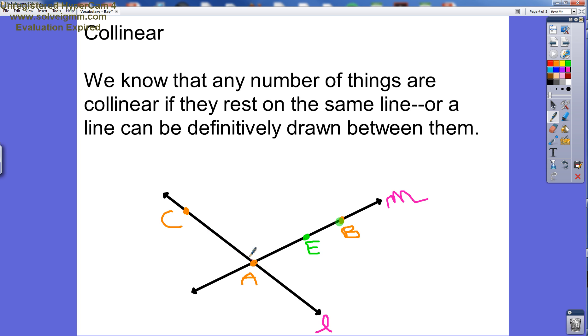C and A are both on a line, line L. A and E are both on a line, line M. But C, A, and E are not on the same line together. We would have to be able to draw a line between them in order to make that work.